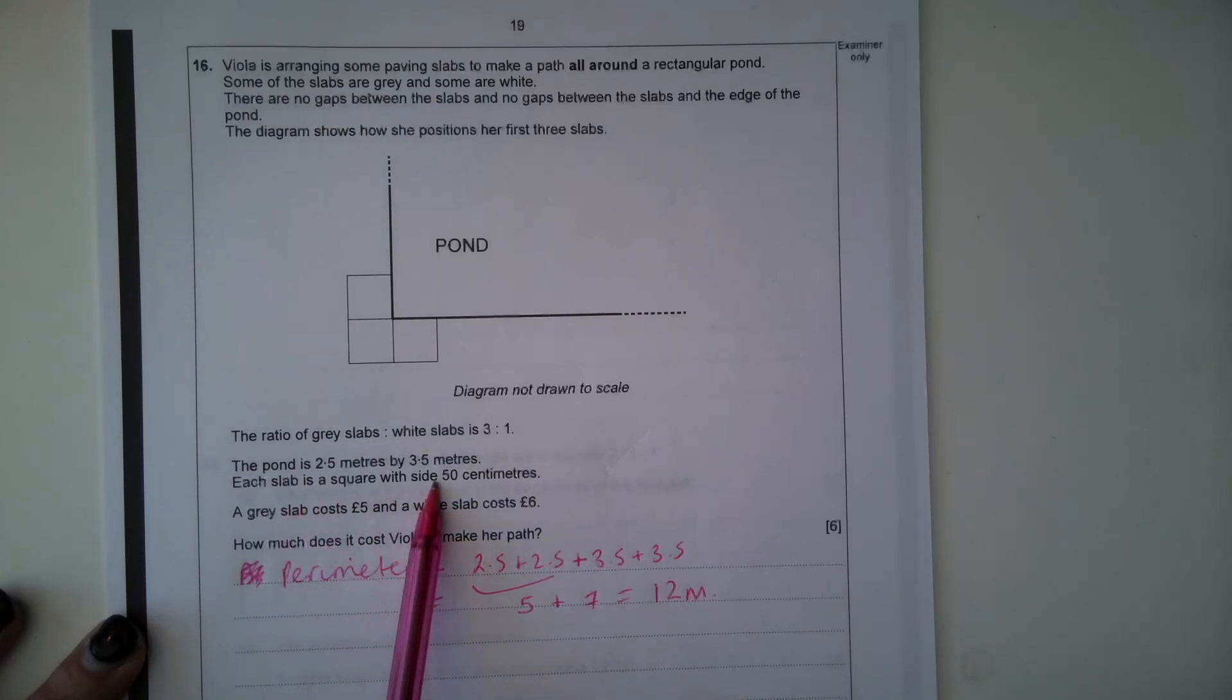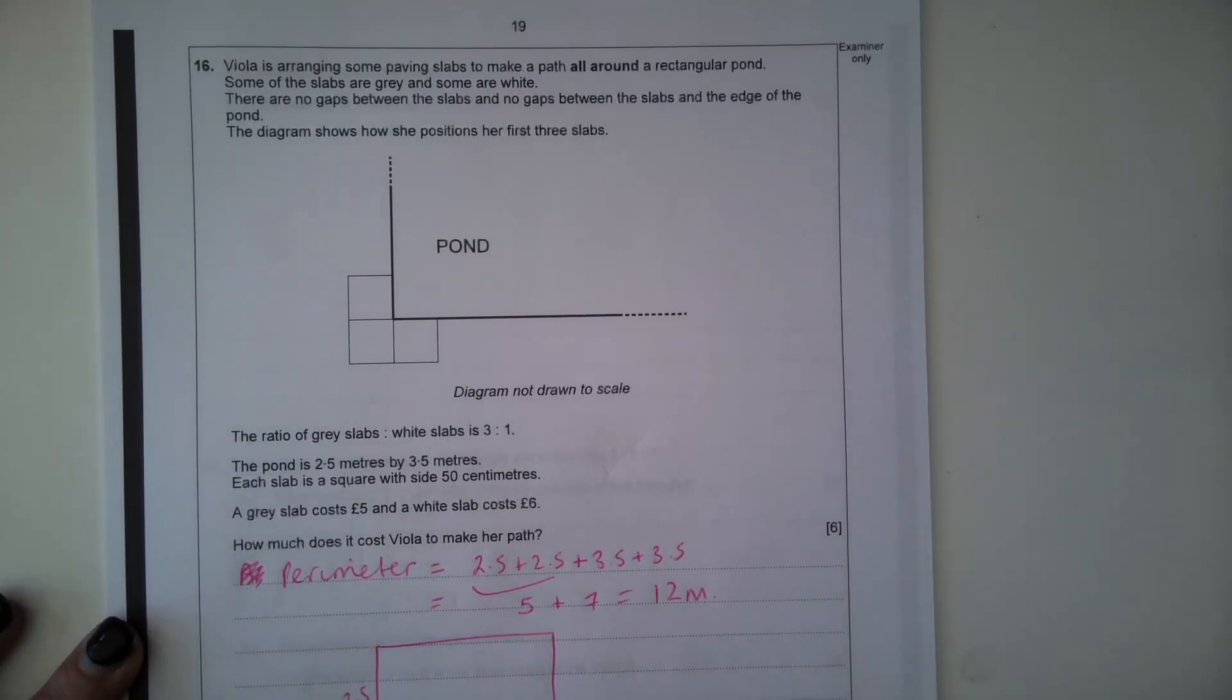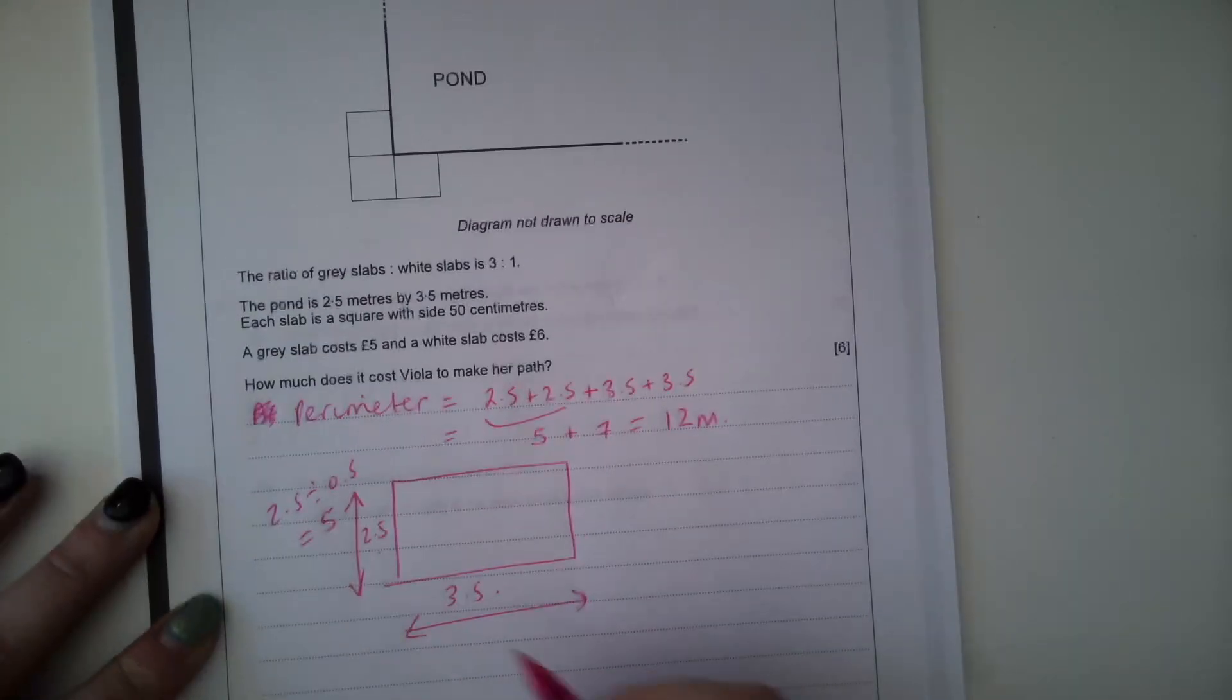Each slab is a square with a side of 50 centimetres. So if it's a side of 50 centimetres and we've got 2.5 by 3.5, we can do 2.5 divided by 0.5, which means there'll be 5 slabs this way. And then 3.5 divided by 0.5 tells us there'll be 7 slabs this way.